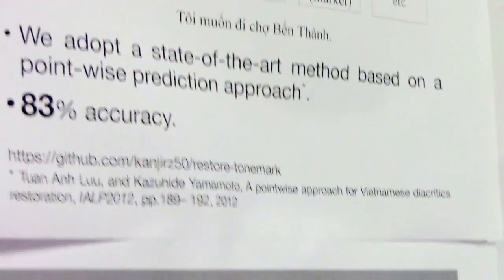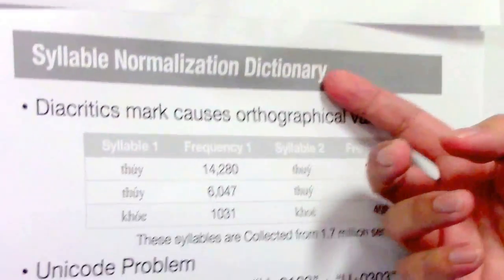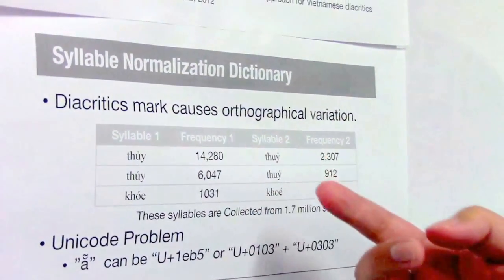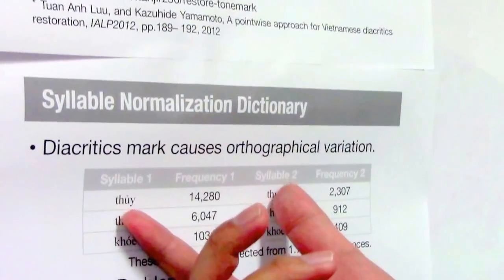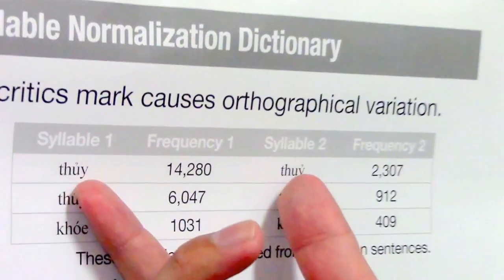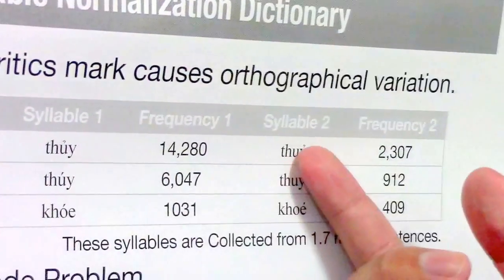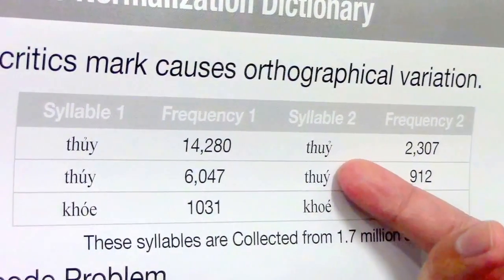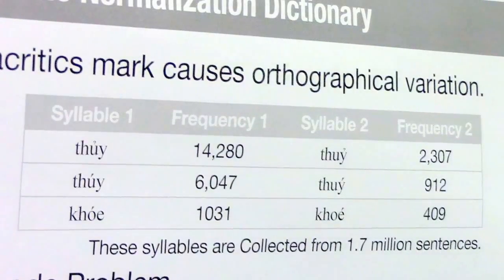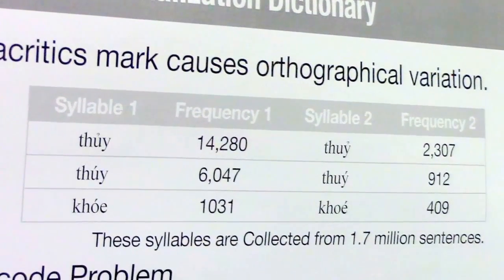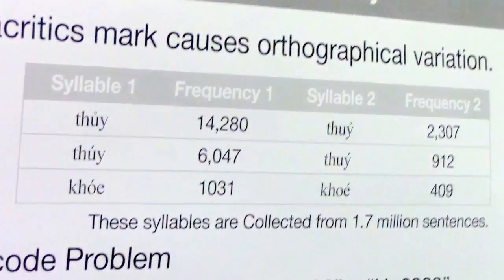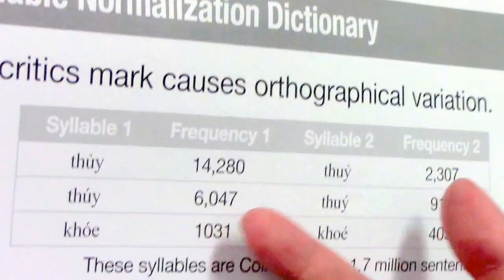Next is the syllable normalization dictionary. Sometimes diacritics marks cause orthographic variation. For example, two spellings of the same word look similar but the position of the diacritics marks is different. This makes it difficult to identify the same word in a computer. So for pre-processing, we have constructed a normalization dictionary.